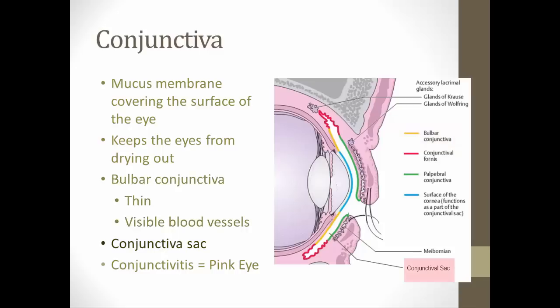The conjunctival sac is where the conjunctiva folds into two layers — this is where contacts sit to hold them in front of our eyes. Conjunctivitis is an infection of the conjunctiva, more commonly known as pink eye. It is very contagious and can be spread from person to person simply by touch — if you touch your eye and then touch someone else's eye, you can spread it very easily.